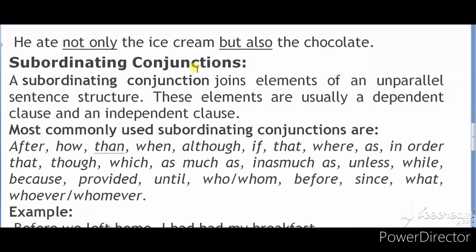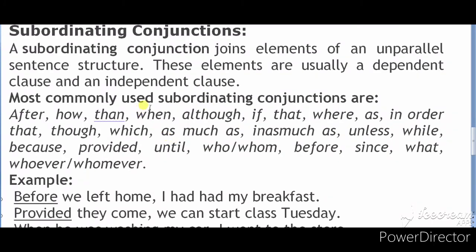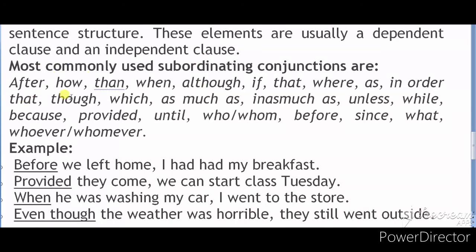So we have the subordinating conjunction. The subordinating conjunctions include: after, when, although, if, that, where, as, in order that, though, which, as much as, as long as, unless, while, because, provided, until, who, whom, before, since, what, whoever, whomever, whenever, and if.